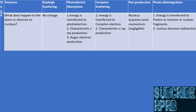What happens to the atom, electron, or nucleus following these interactions? No change occurs to the atom in Rayleigh scattering. In the photoelectric effect, energy is transferred to the photoelectron, which may be lost in the medium through multiple excitation, ionization, and radiative losses. After losing kinetic energy, the photoelectron will be absorbed by an atom in the medium. Inner orbital electron removal by the photoelectric effect leads to electronic transition from the outer shell to the inner shell, releasing energy as a characteristic X-ray. An Auger electron may be emitted from the atom as an alternative to the characteristic X-ray.